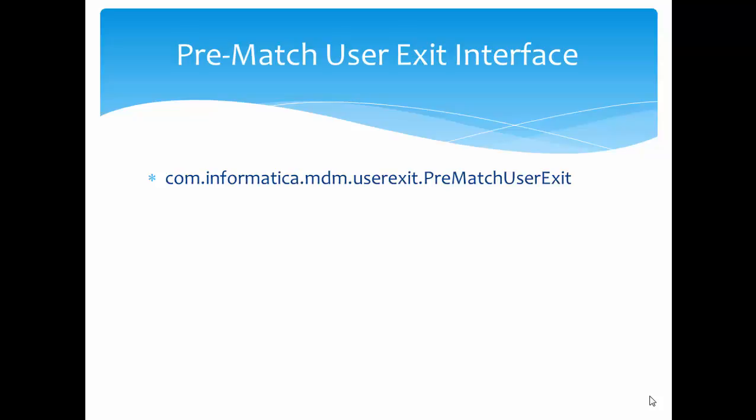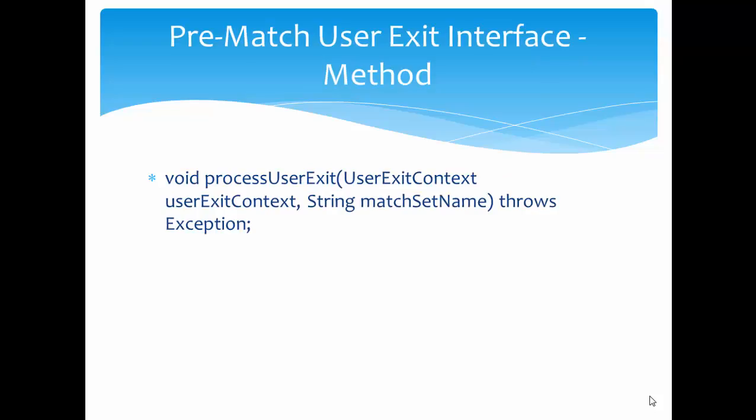MDM-UE.jar provides the interface for implementing the pre-match user exit. The name of the interface is com.informatica.mdm.userexit.PreMatchUserExit. We need to implement this interface and override the processUserExit method. The signature of that method is: return type is void, it accepts the parameters UserExitContext and match set name as a string, and it also throws a generic exception named Exception — meaning any specific exception is wrapped into the generic Exception.